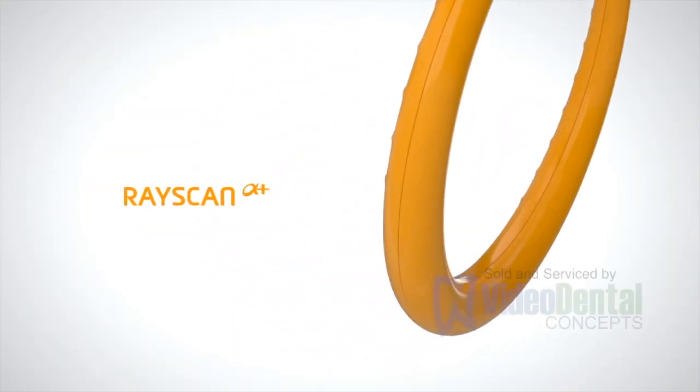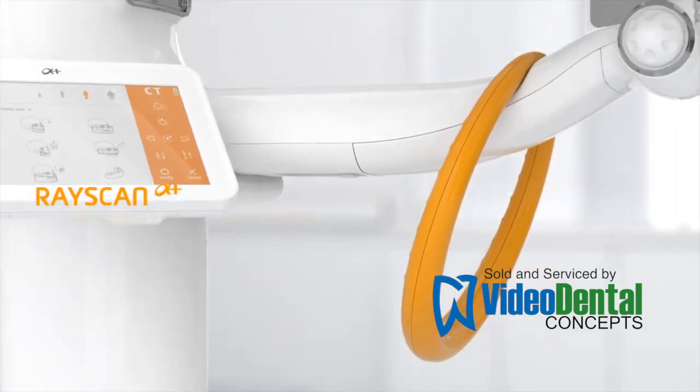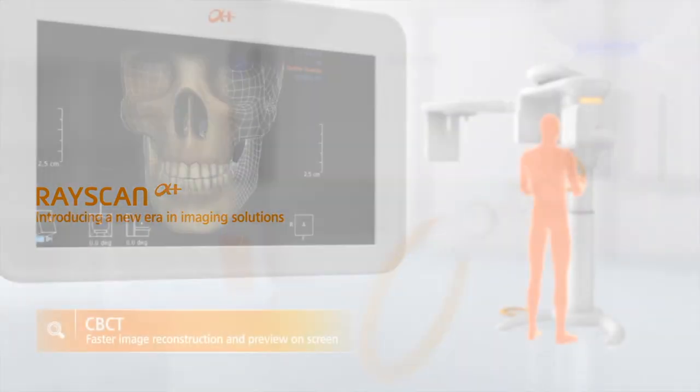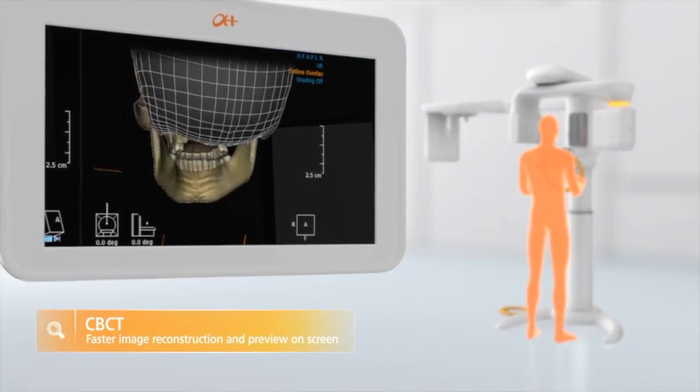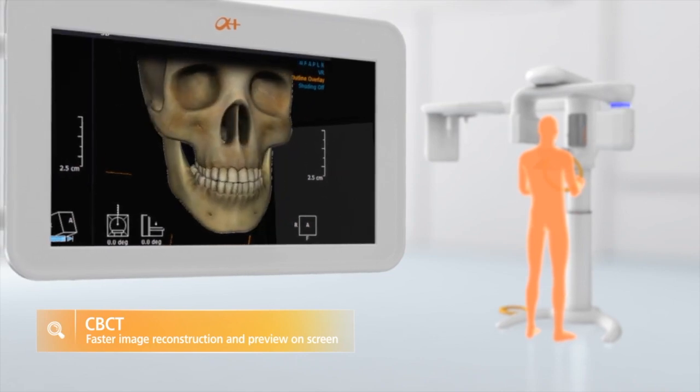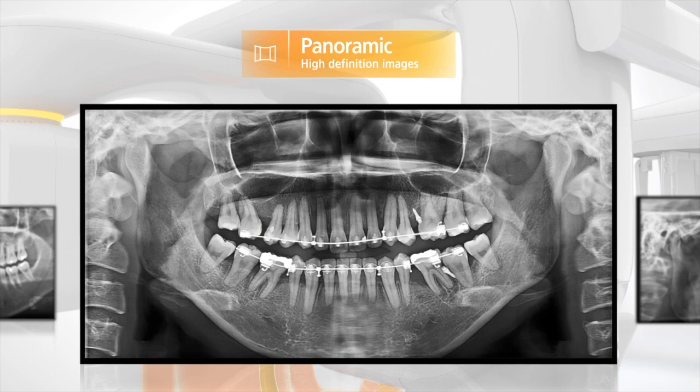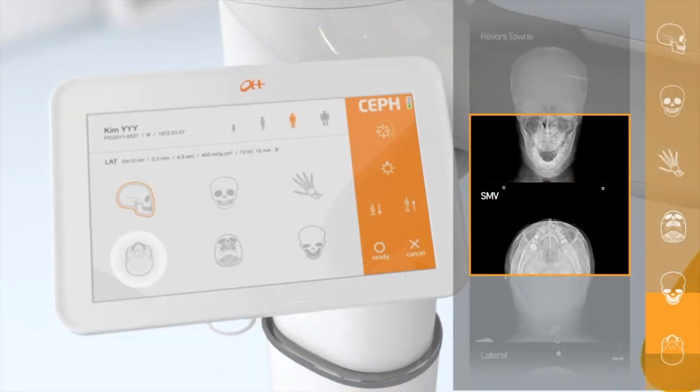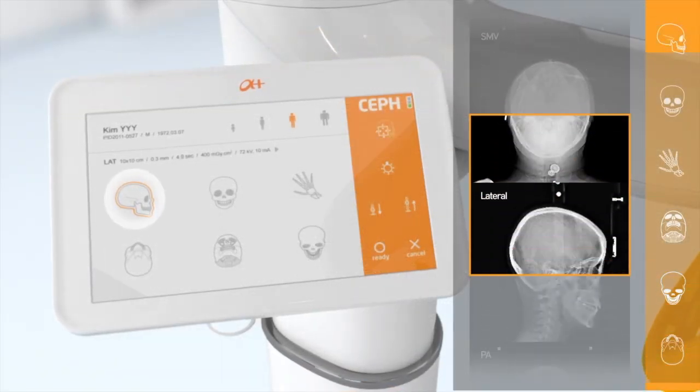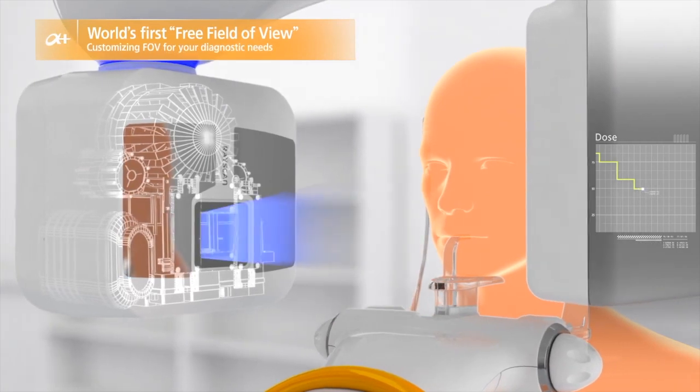The RayScan Alpha Plus is an award-winning 3D CBCT imaging solution with high-definition 2D panoramic views, cephalometric options including OneShot Ceph, and the world's first free field of view that lets you target only the needed anatomy.